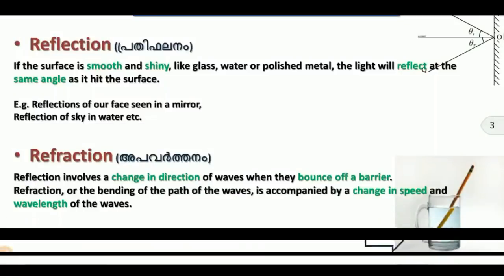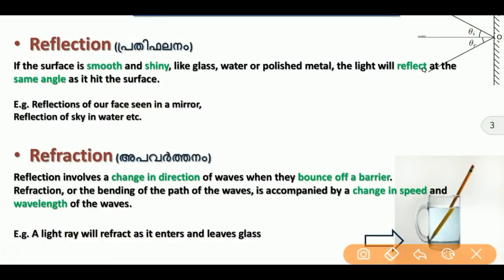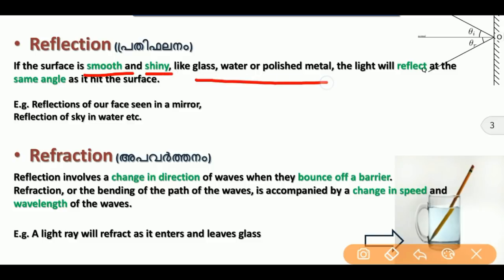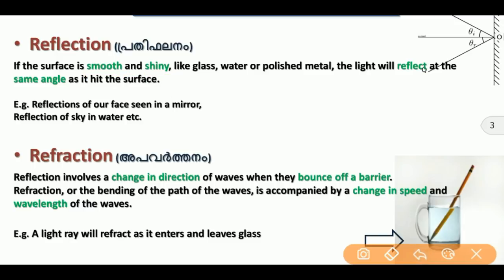The speed of light is the same for all. Now let us look at optical phenomena. First is Reflection. If the surface is smooth and shiny — like glass, water, or polished metal — light will reflect at the same angle as it hits the surface.